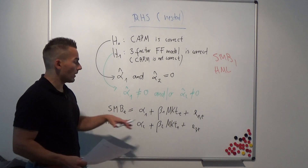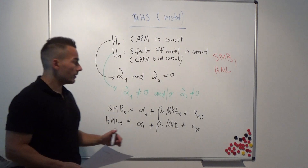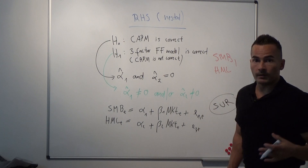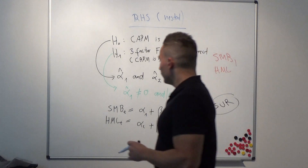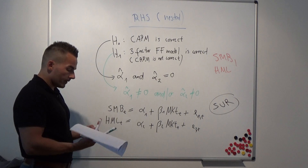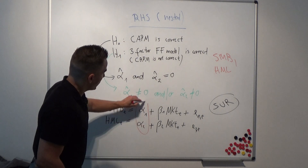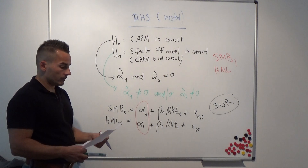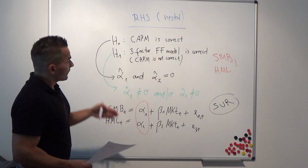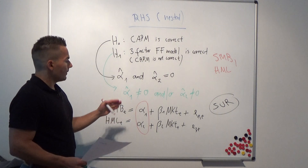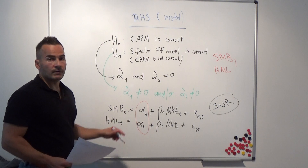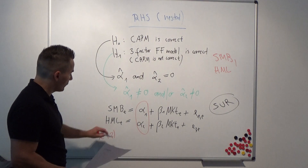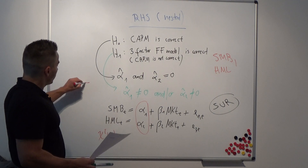What is the method for estimating this model? It is a multiple equation model with two equations, so the correct method is the seemingly unrelated regression (SUR) technique. Using SUR, we run this model and are interested in whether the intercept terms are significant or not. If the CAPM is correct, those intercepts would be simultaneously not different from zero — giving us a chi-square test with two degrees of freedom, with the critical value of 5.99.